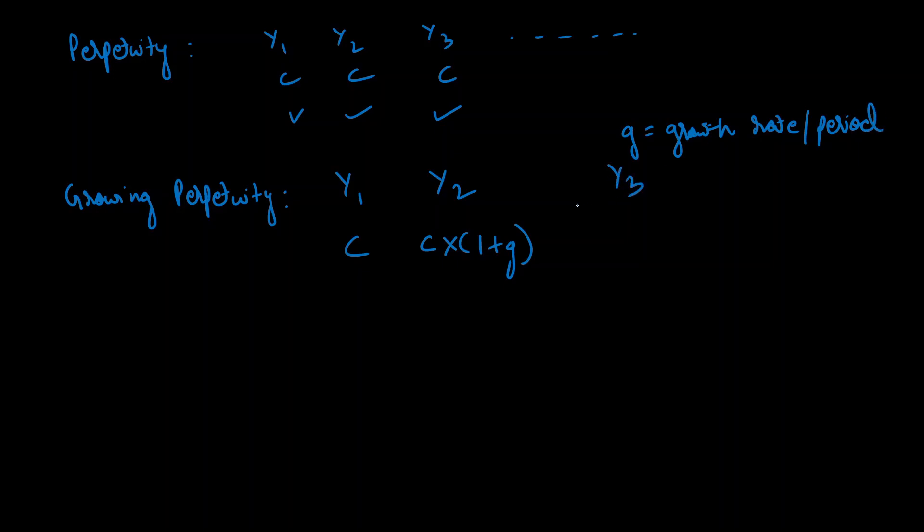And in year three you'll get g percent on top of what you have in year two, so you're going to get c times (1 + g) to the power two, and this will go on forever. So that is a growing perpetuity—a perpetuity where the cash flows grow at a rate g percent every period.